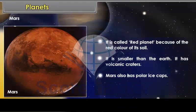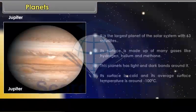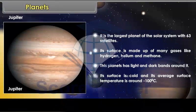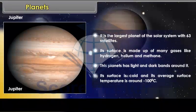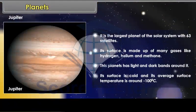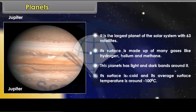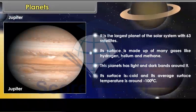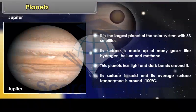Jupiter. Its surface is made up of many gases like hydrogen, helium and methane. This planet has light and dark bands around it. Its surface is cold and its average surface temperature is around minus 100 degrees Celsius.